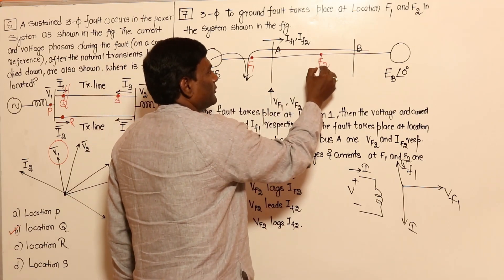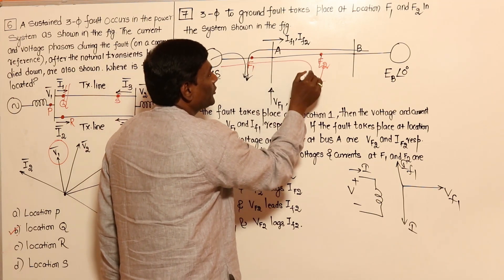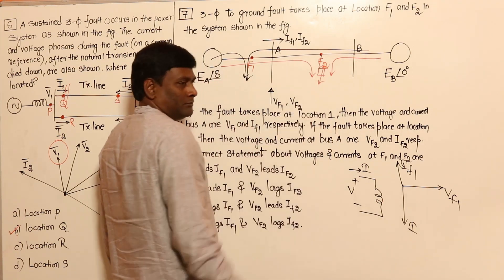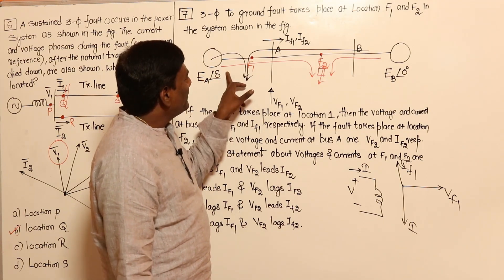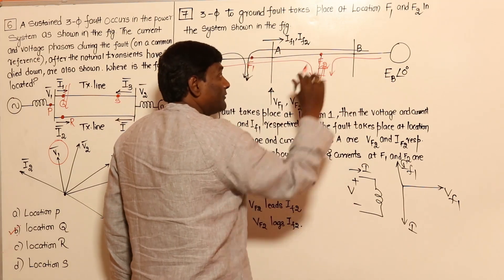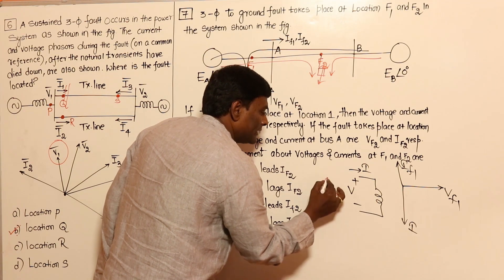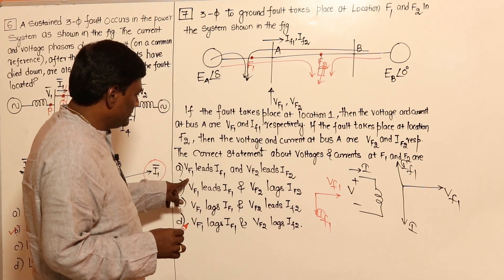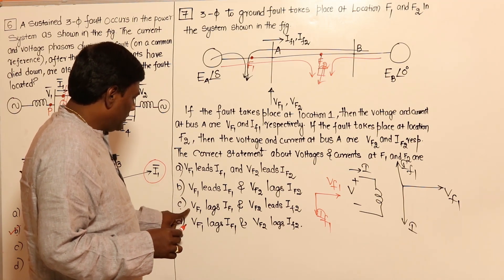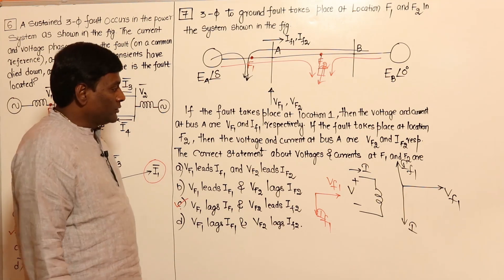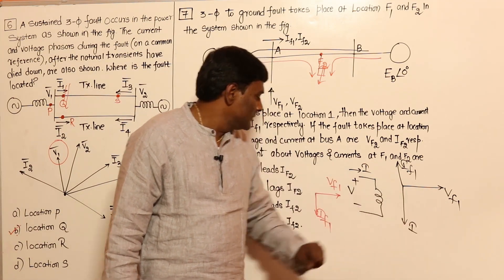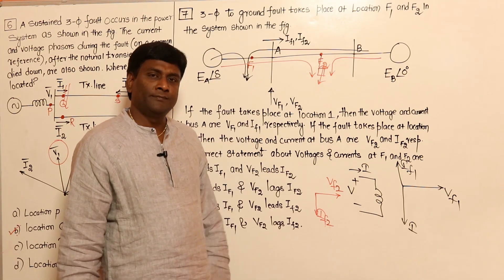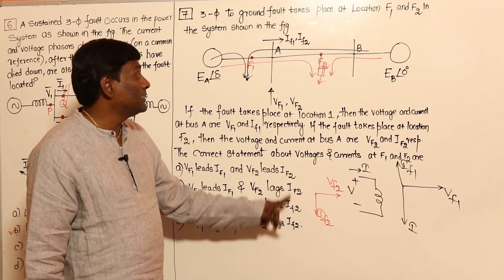If the fault occurs at F2, this generator gives fault current in the same direction as If1, and the other generator also gives fault current across impedance Z. The current is in the same direction, so Vf2 leads If2. The current direction must be properly taken into account.